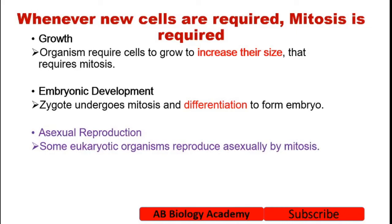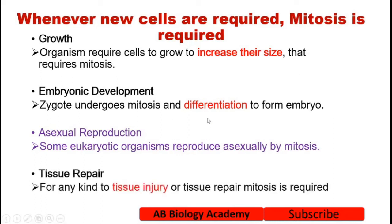Asexual reproduction occurs in many organisms and also requires mitosis. Some eukaryotic organisms reproduce asexually by mitosis. For tissue repair — for any kind of tissue injury, mitosis is required. Surrounding cells receive a signal and those cells then undergo mitosis to repair the tissue.